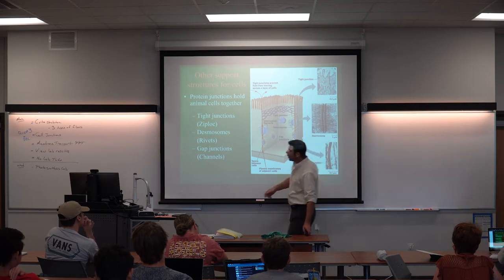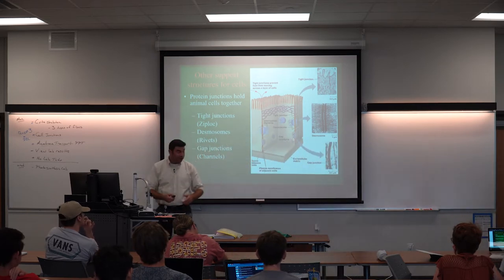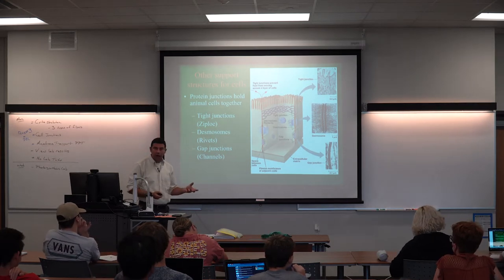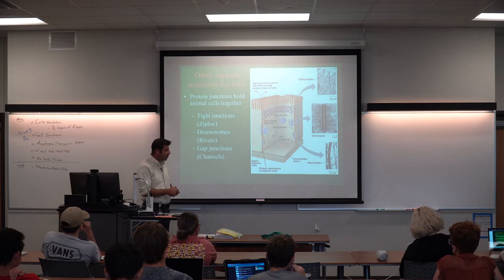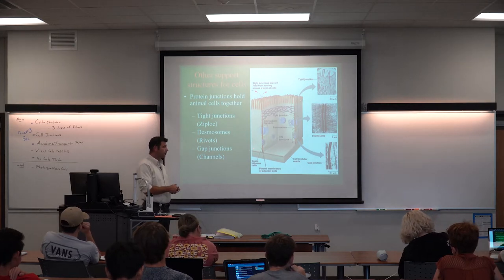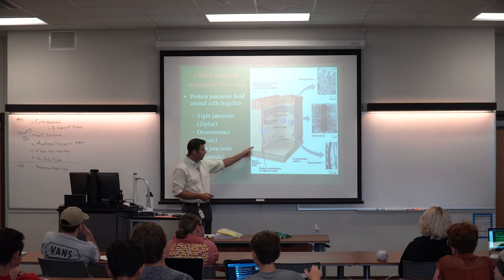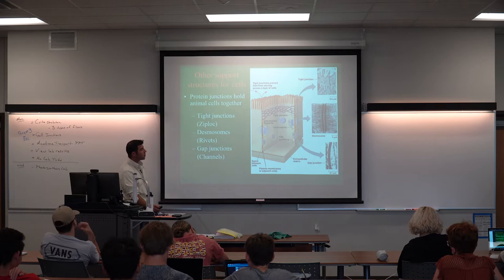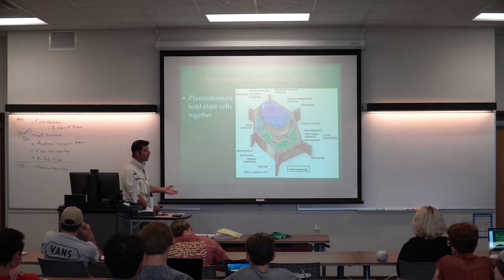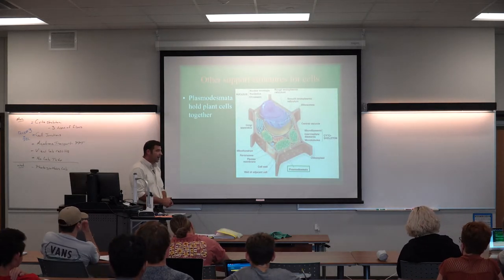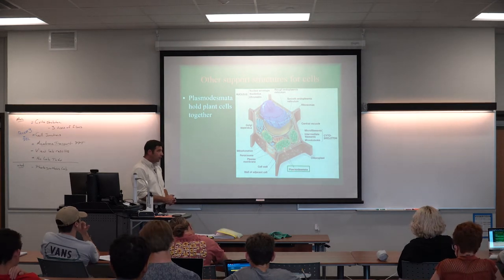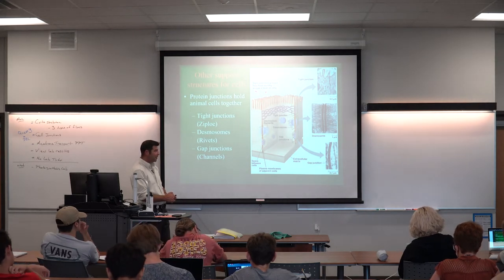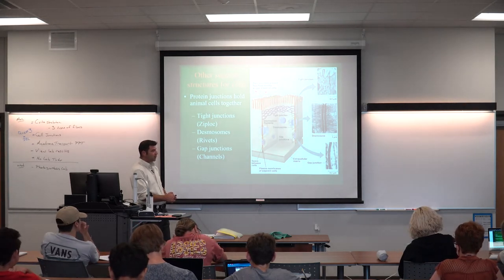The buttons represent desmosomes and the zipper represents tight junctions. The only other cell junction we need to know in animal cells are gap junctions — they're like a hollow tube or straw that connects the cytoplasm of one cell to the adjacent cell, so cytoplasm can freely flow from one cell into the next. When we talk about plant cells, we add plasmodesmata, which behaves just like a gap junction but has to go through a cell wall.